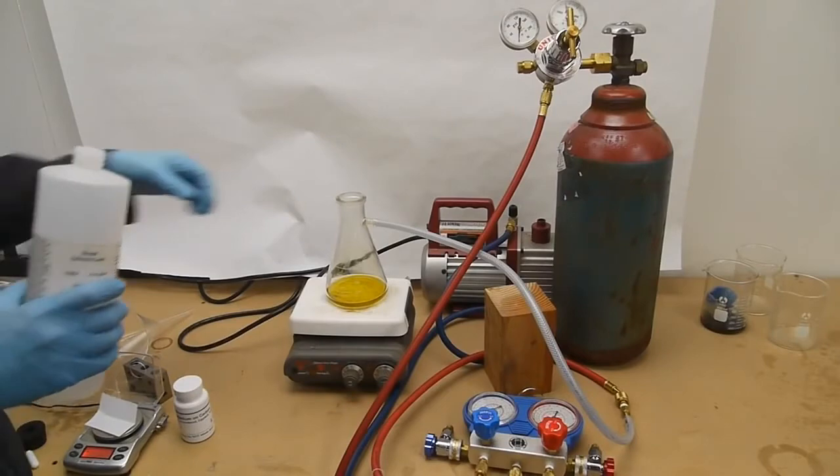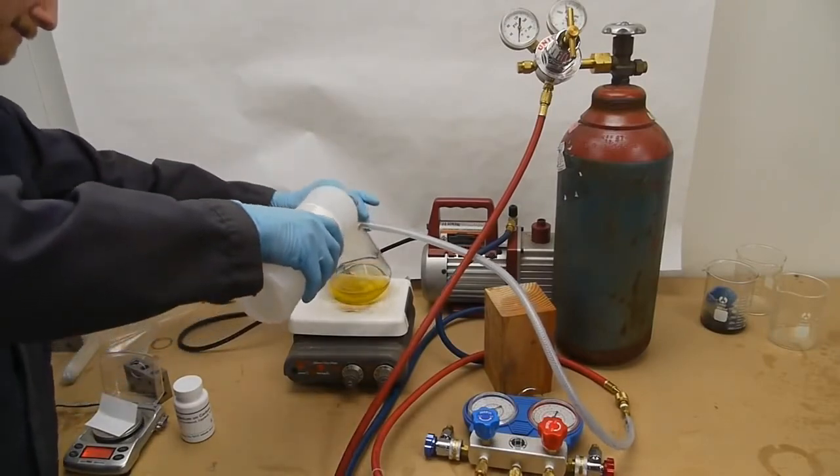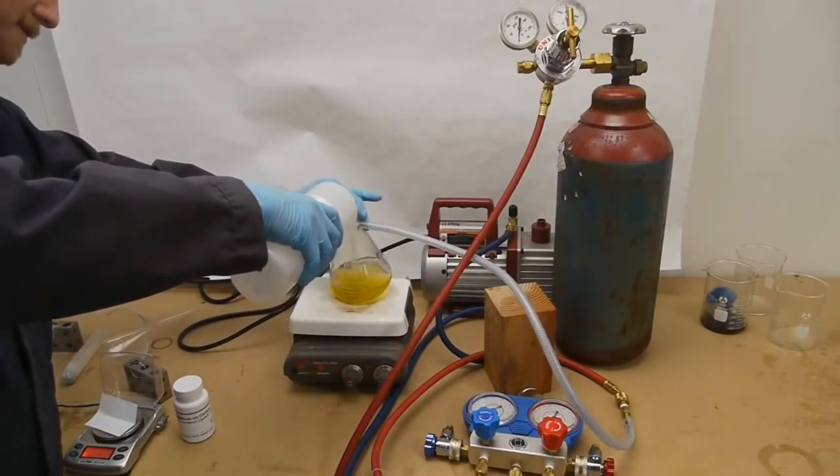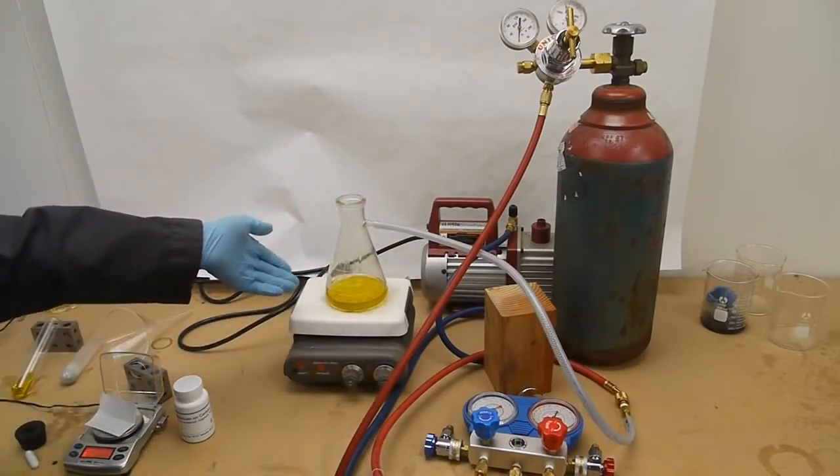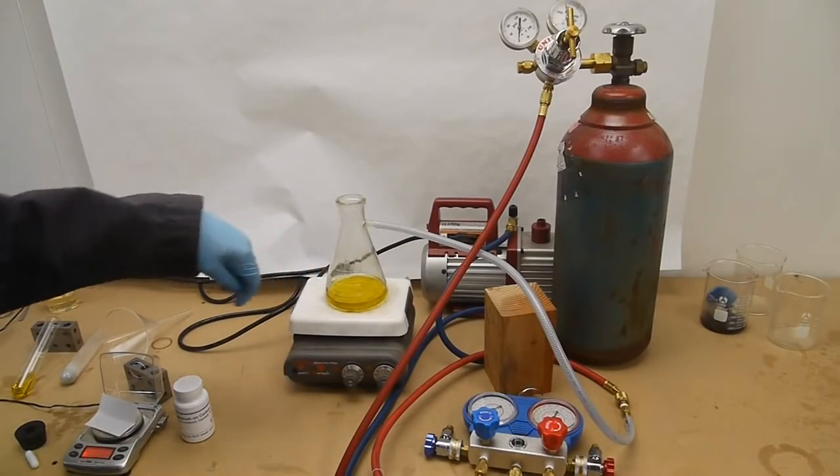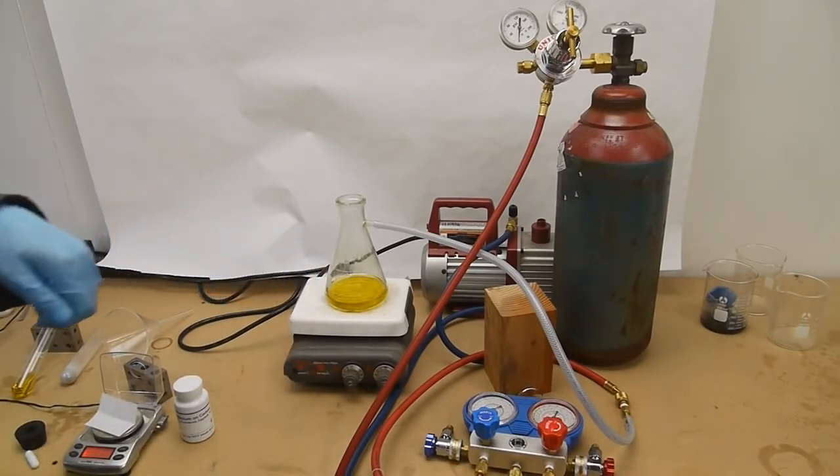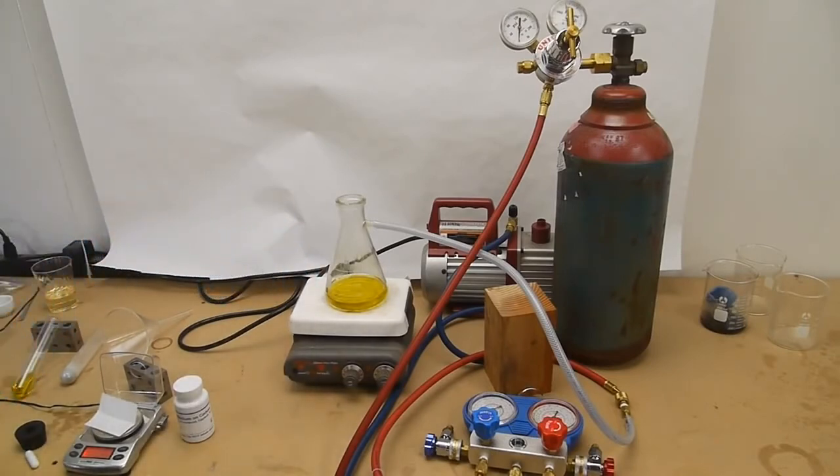To the olive oil I'm adding hexane, which is going to serve as a solvent. Since we're creating a hydrogenated oil or solid oil in here, we need a solvent to prevent this from forming solid chunks and making the reaction slow down. The hexane just serves as a carrier to keep everything liquid.